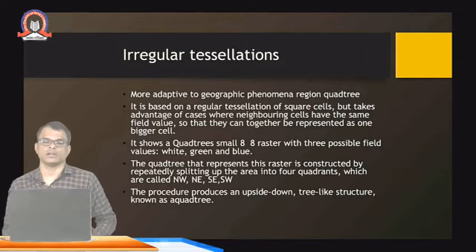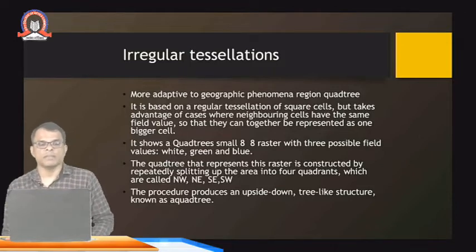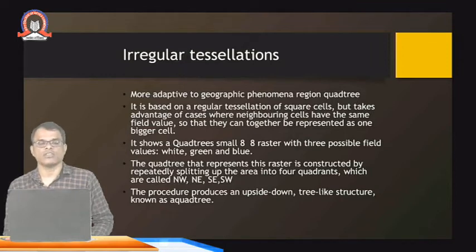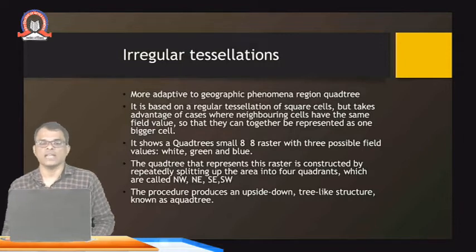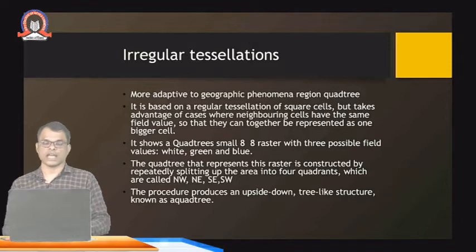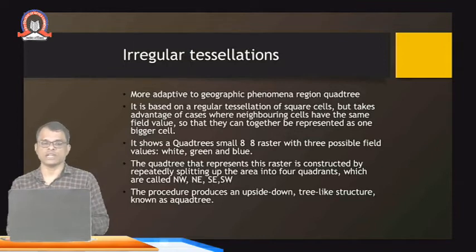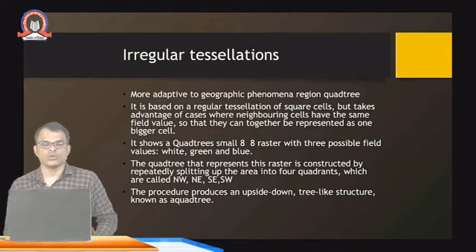The quadtree is based on a regular tessellation of square cells but takes advantage of cases where neighboring cells have the same field values, so they can come together and be represented as one bigger cell. The idea is that if four cells have the same values and are nearby, we can consider them together as a bigger cell. This shows a quadtree with a small 8×8 raster with three possible field values: white, green, and another.